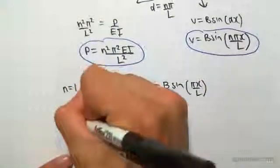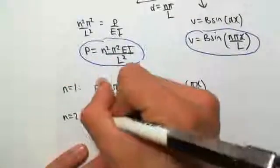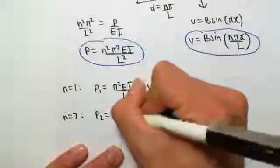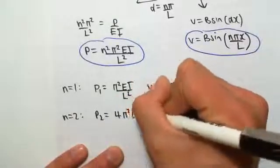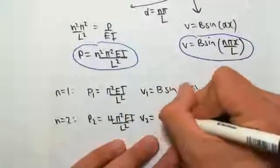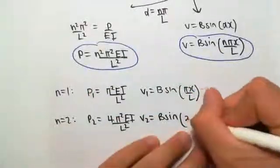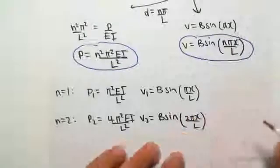For n equals 2, I'm just going to do three cases. So n squared would be 4, so p2 would equal 4 pi squared EI on L squared, and v2 would equal B sine, n equals 2 subbing in, would be 2 pi x on L.